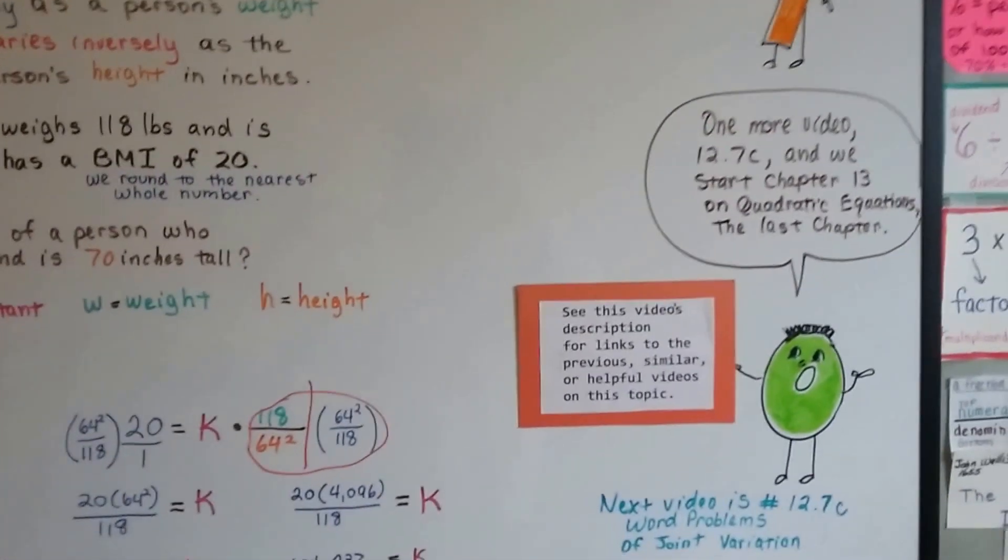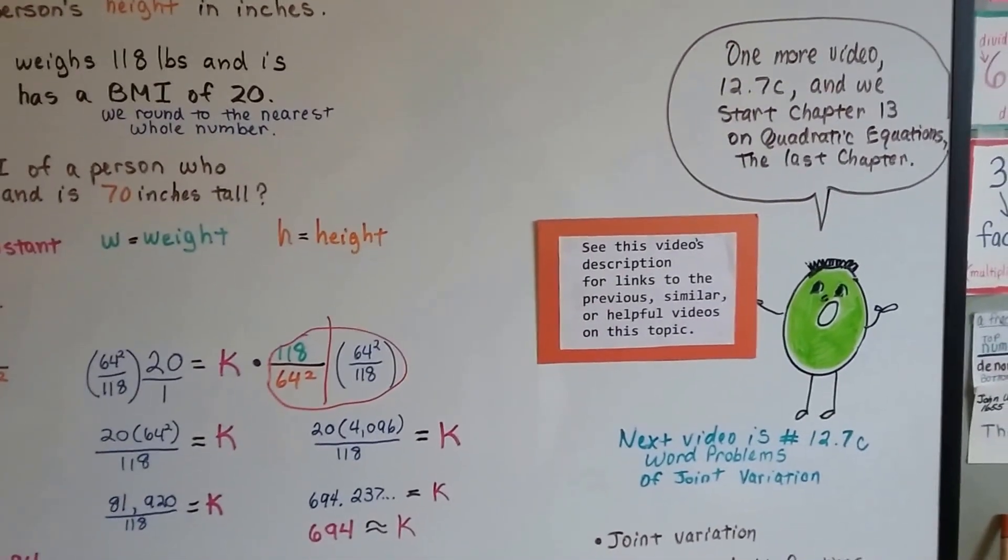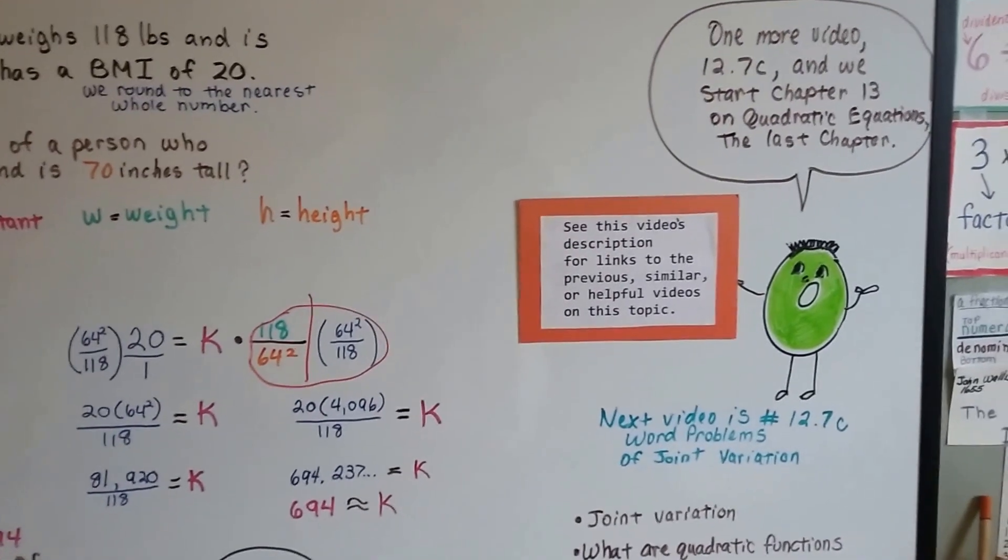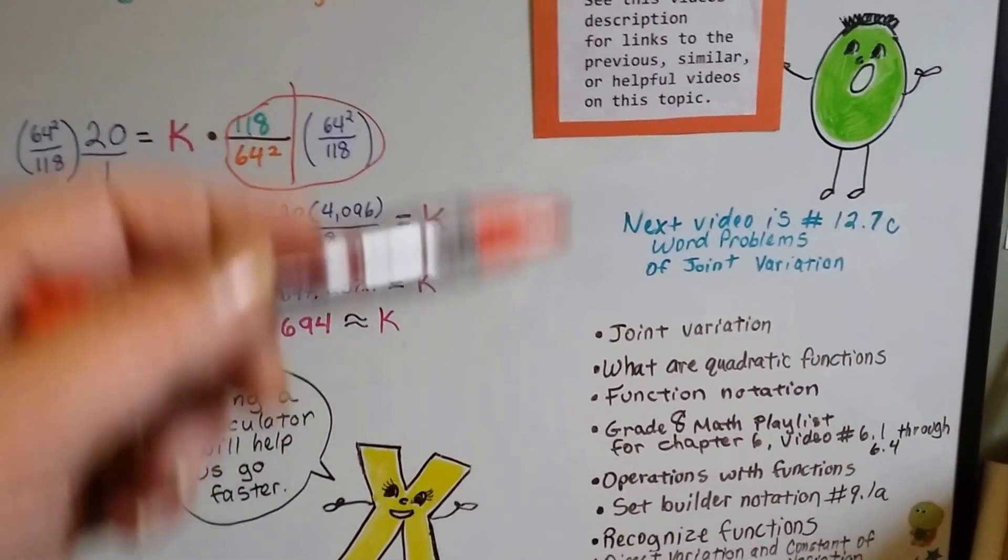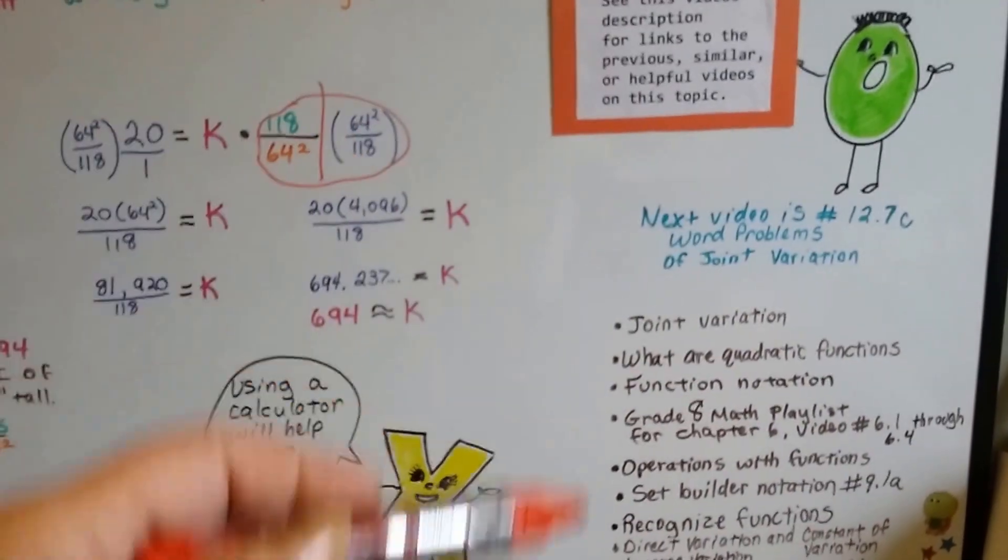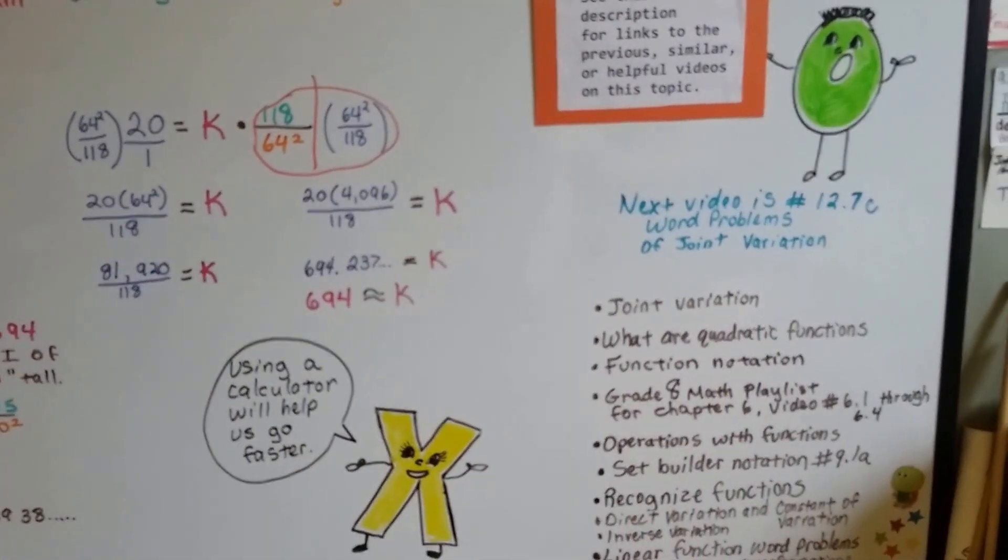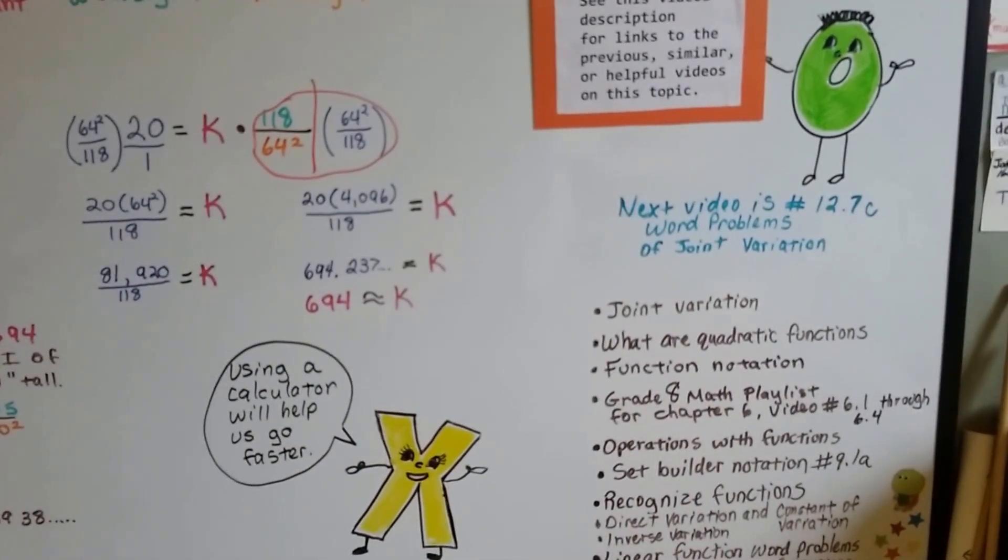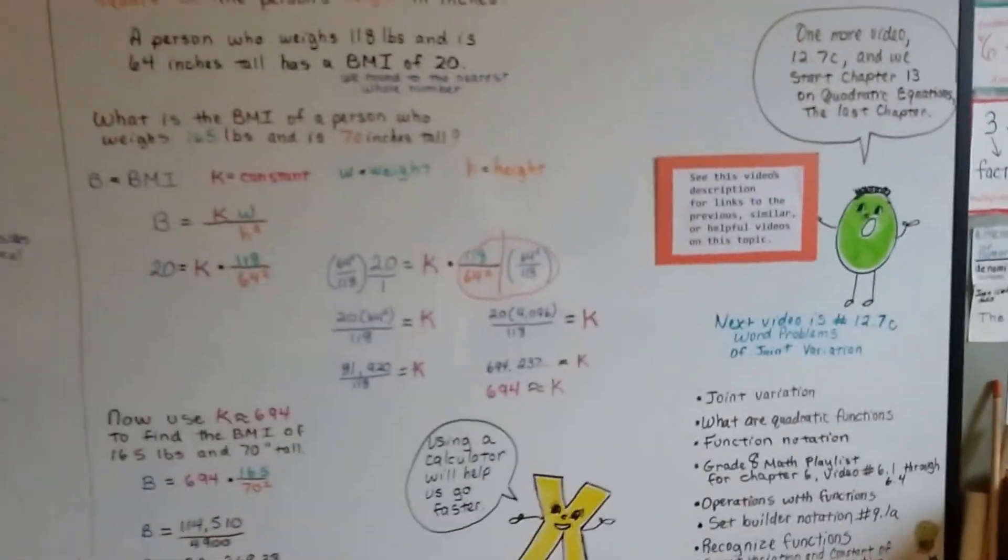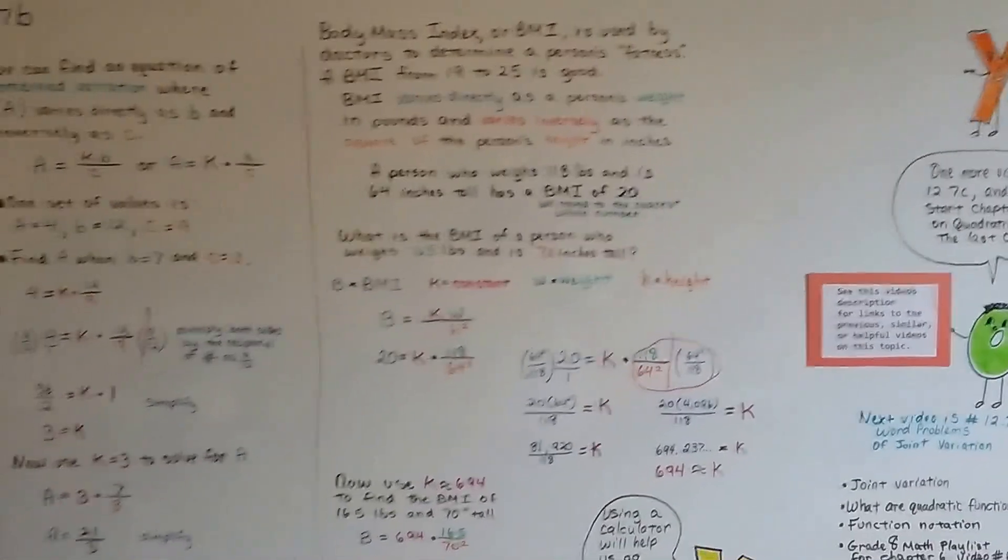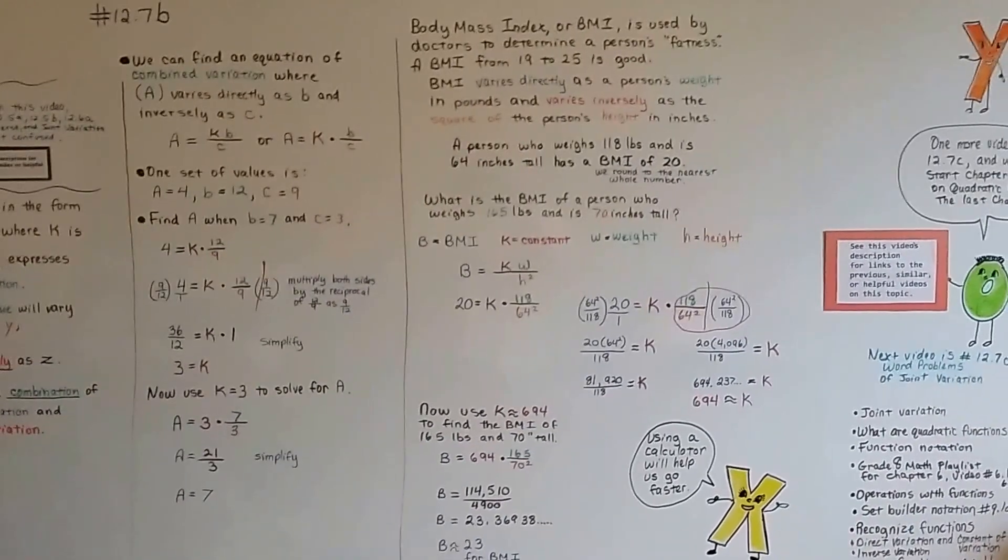We've only got one more video, 12.7c, and we start Chapter 13. That's Quadratic Equation, the last chapter in the book. In this video's description, there's going to be a link to all the previous videos of Chapter 12 to help you out. Our next video is 12.7c. We're going to talk about word problems of joint variation, and then we'll start on our last chapter. I hope this was helpful, and I hope you have fun figuring out your BMI. I'll see you next video. Bye!